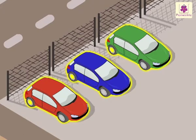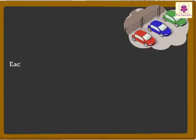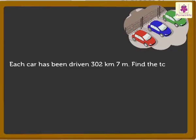Look at these three cars. Each car has been driven 302 kilometers 7 meters. Let's find out the total number of kilometers and meters they have been driven.